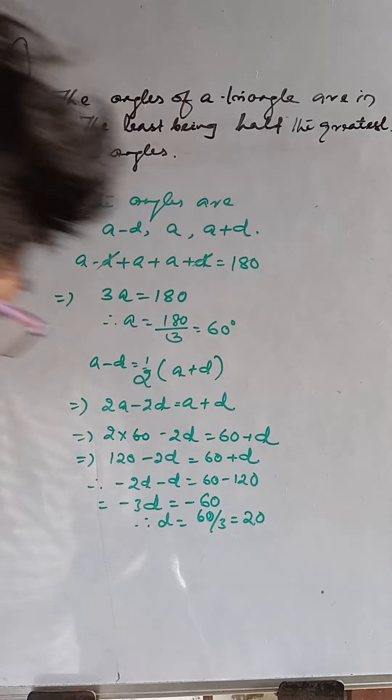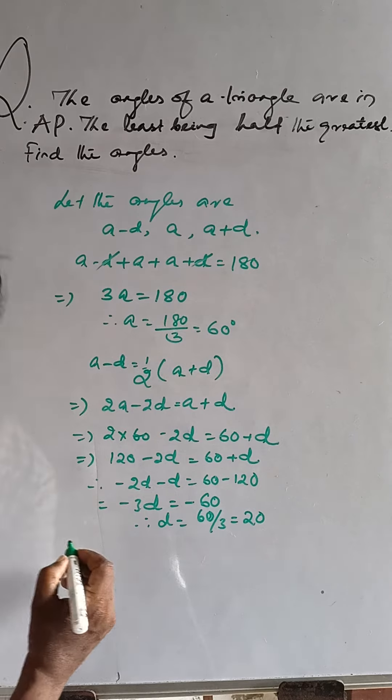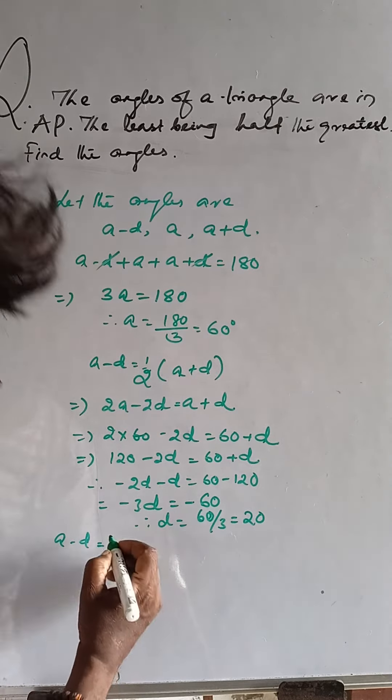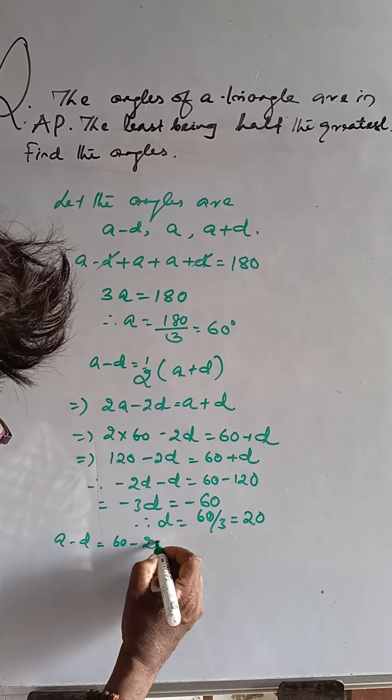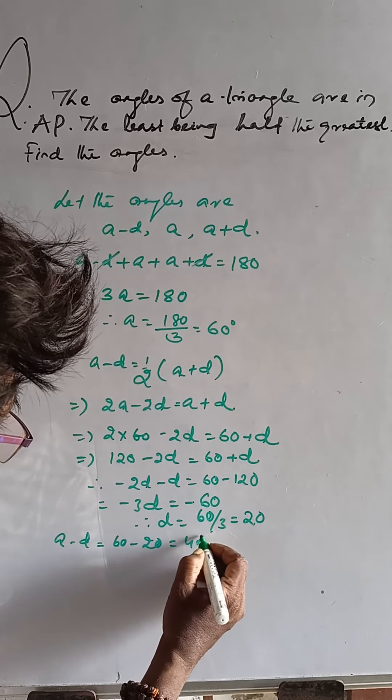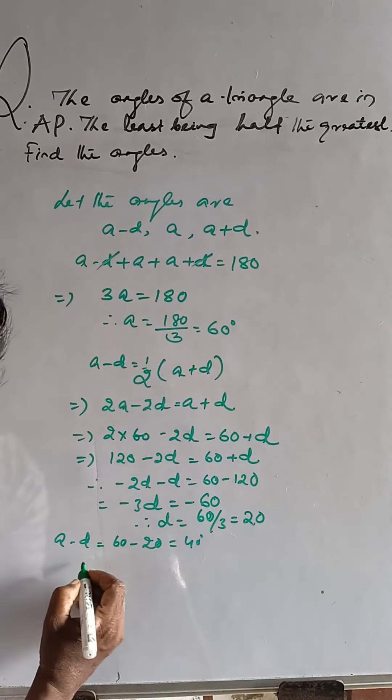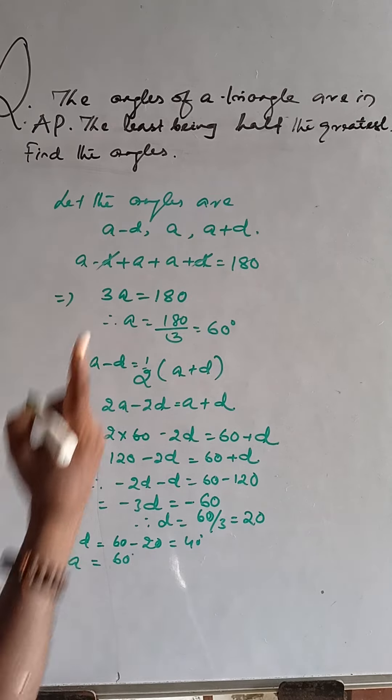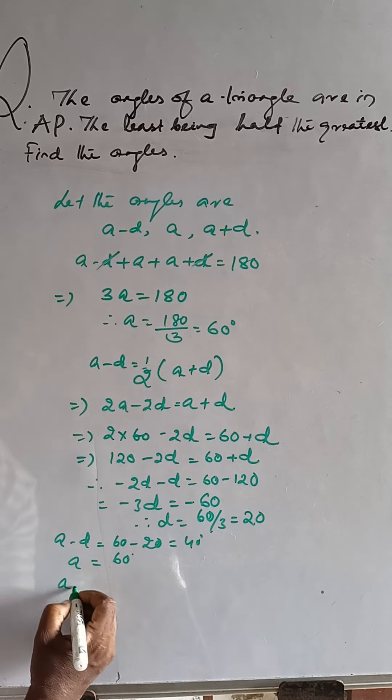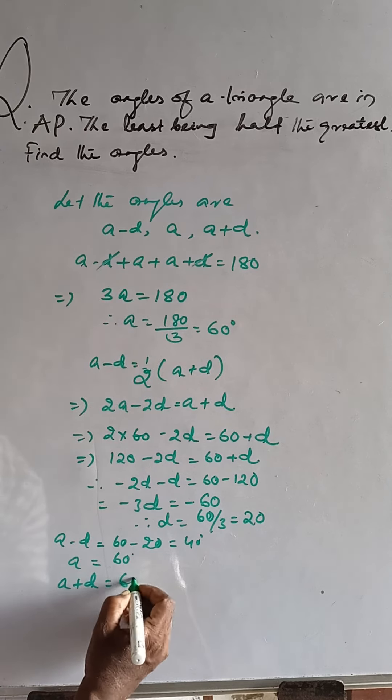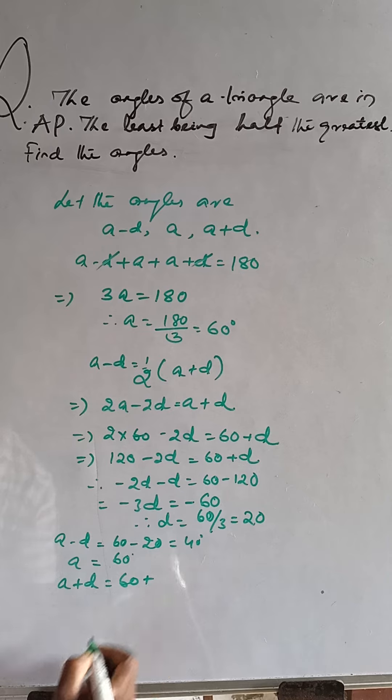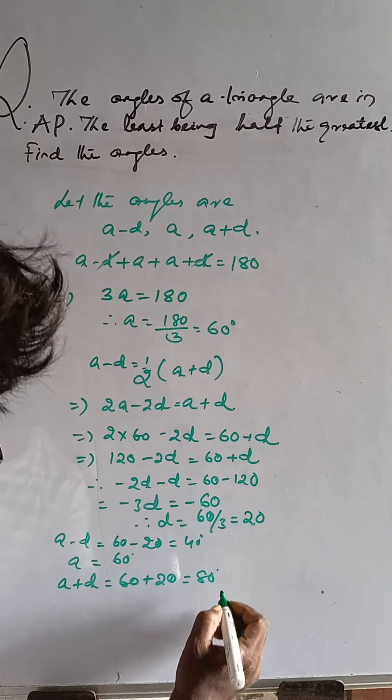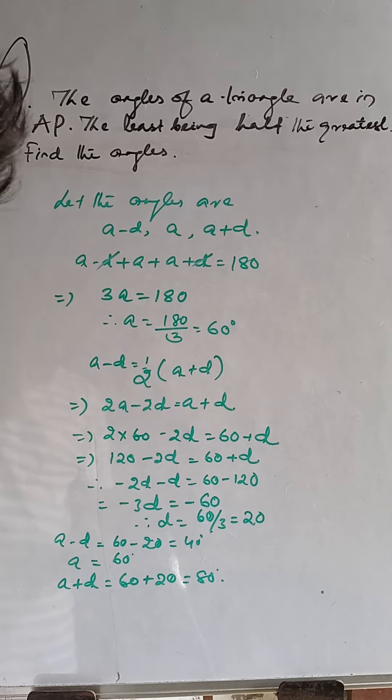So, D is equal to 20. First angle A minus D is equal to 60 minus 20, that is 40 degrees. Second angle A is equal to 60 degrees. And third angle A plus D is equal to 60 plus 20, that is 80 degrees. The angles are 40 degrees, 60 degrees, and 80 degrees.